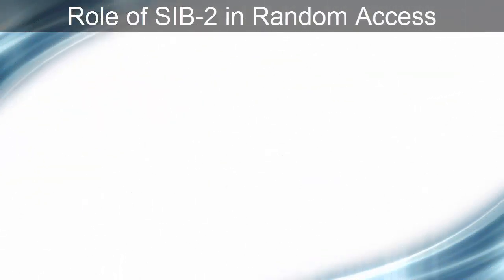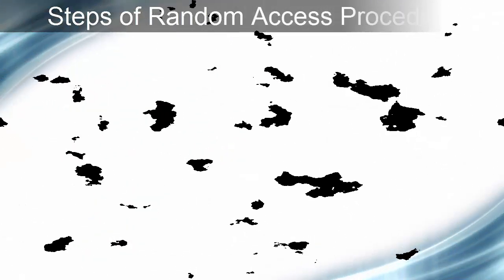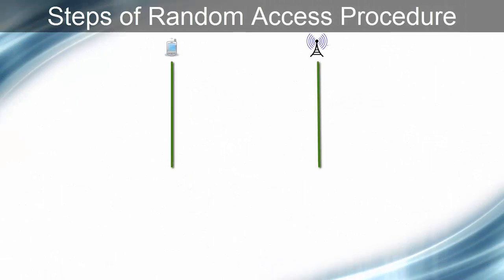UE gets all the Random Access related parameters of the cell by reading SIB2. I have highlighted all the Random Access related parameters of SIB2 in red. We will go through the complete Random Access process and see the importance of each parameter. UE triggers the RACH procedure by sending a RACH preamble to the eNodeB on the PRACH channel. PRACH means Physical Random Access Channel.